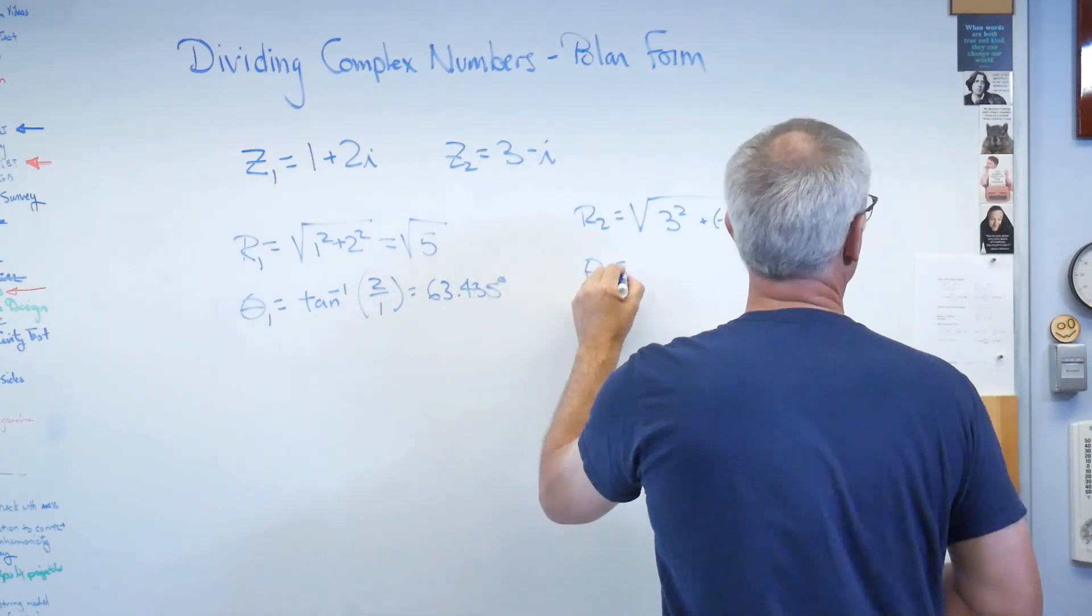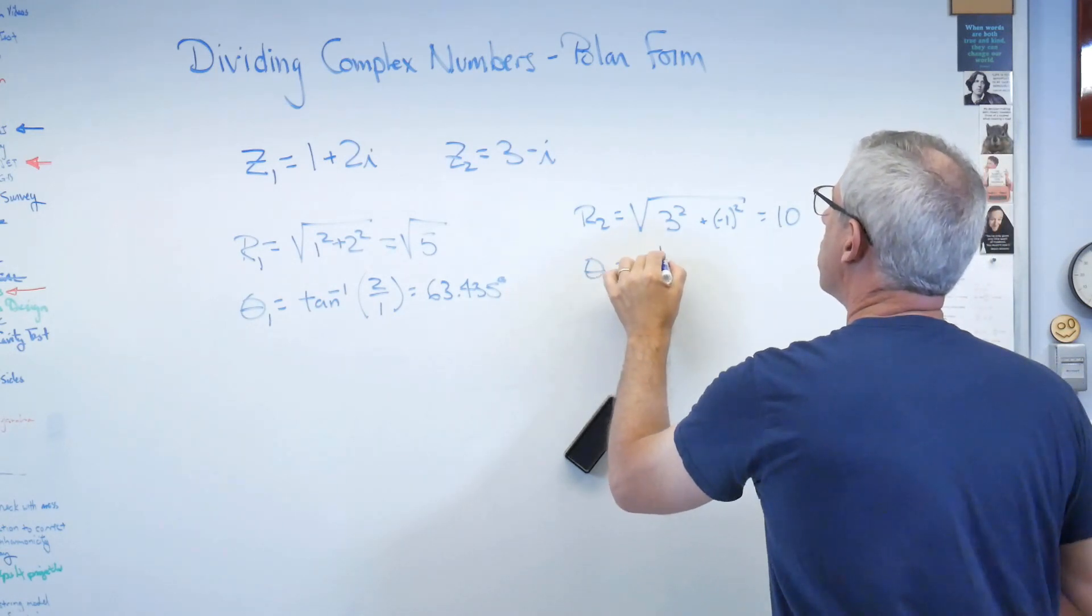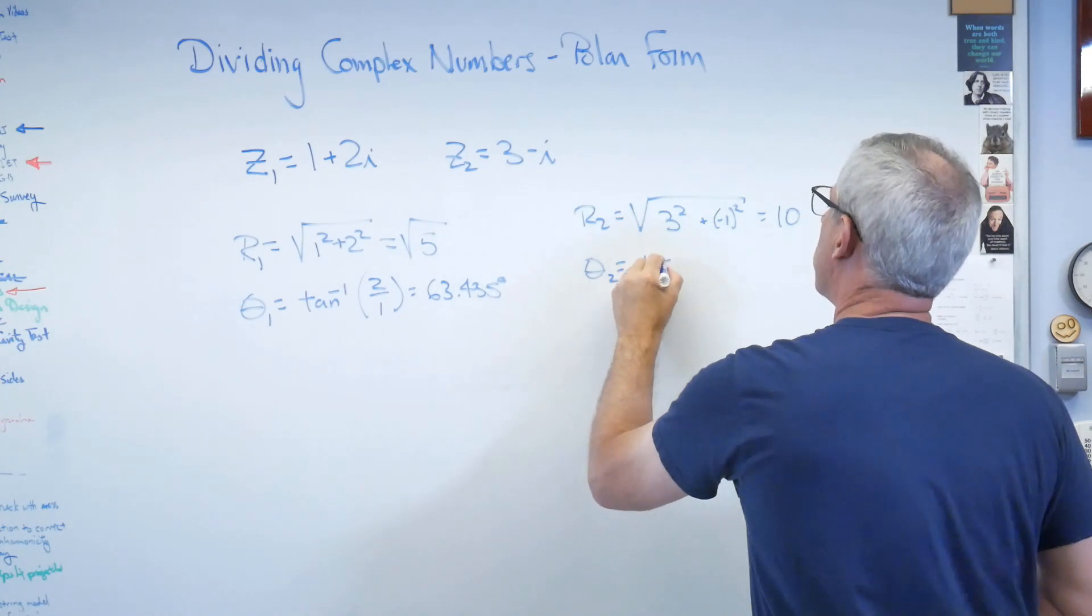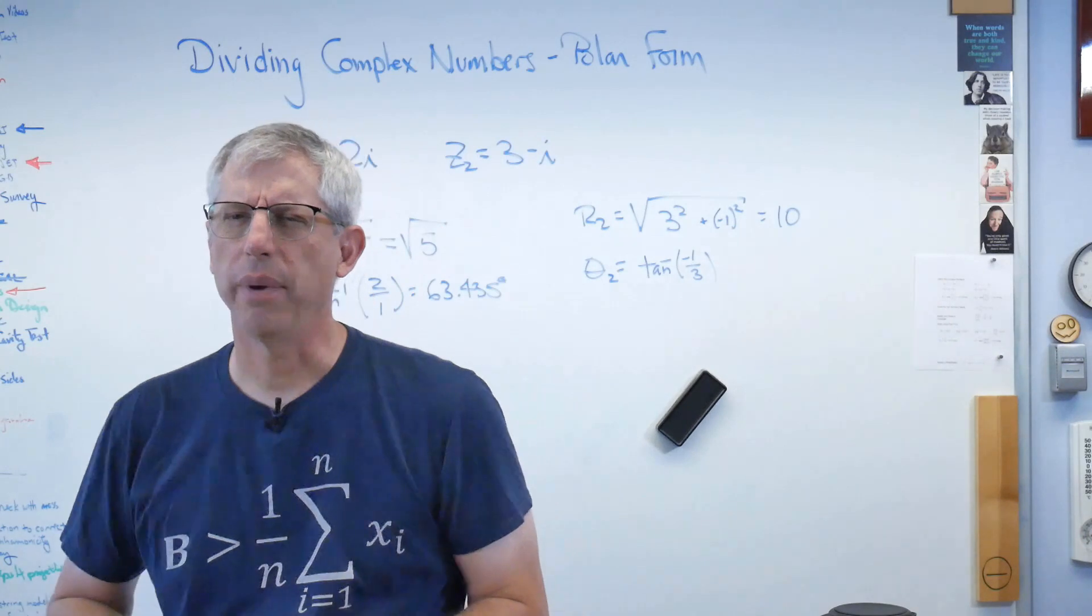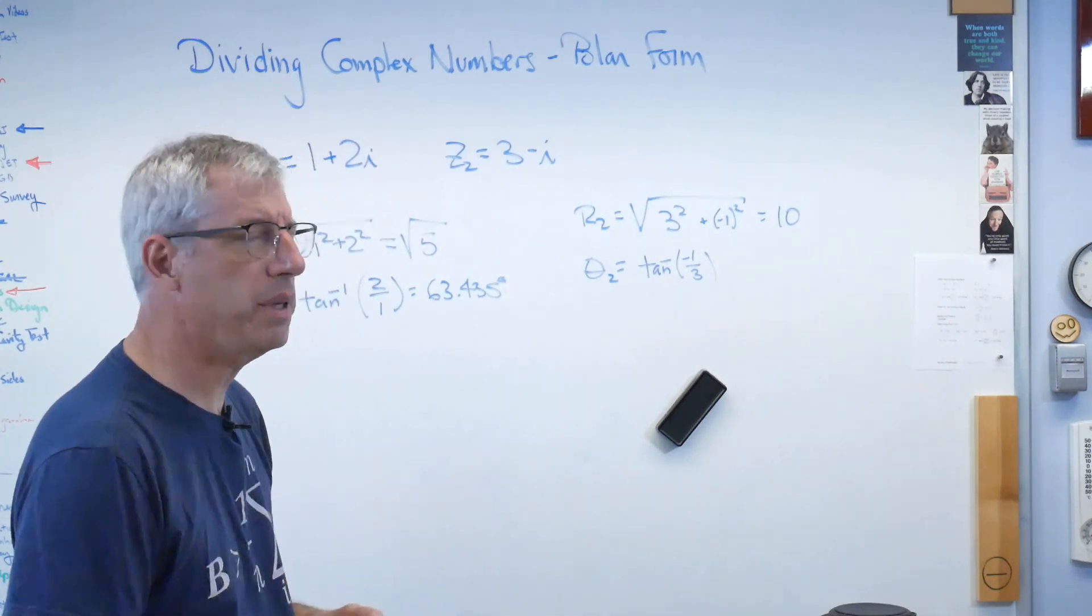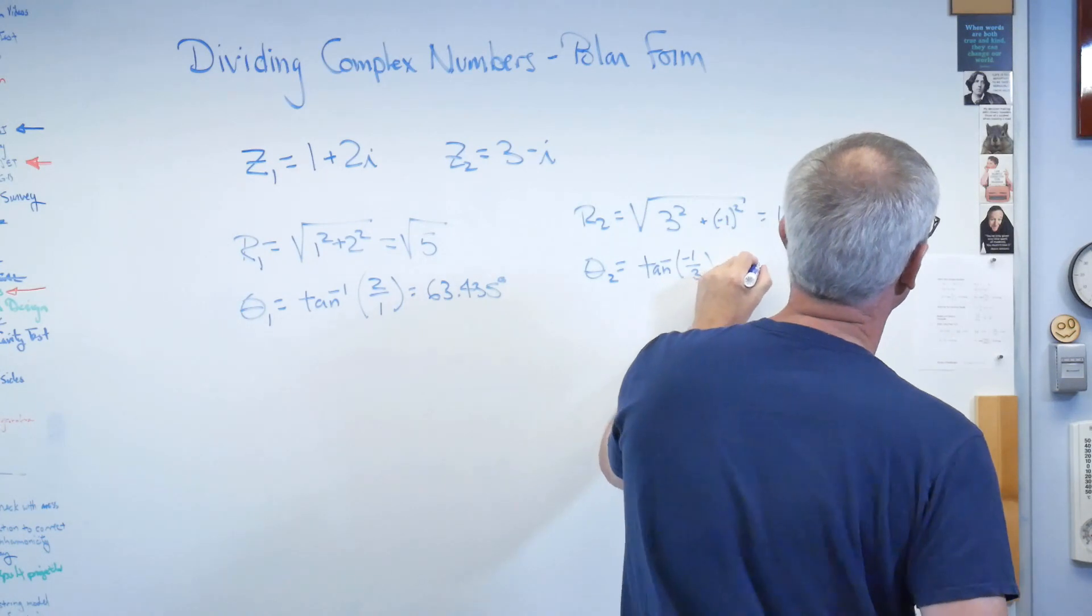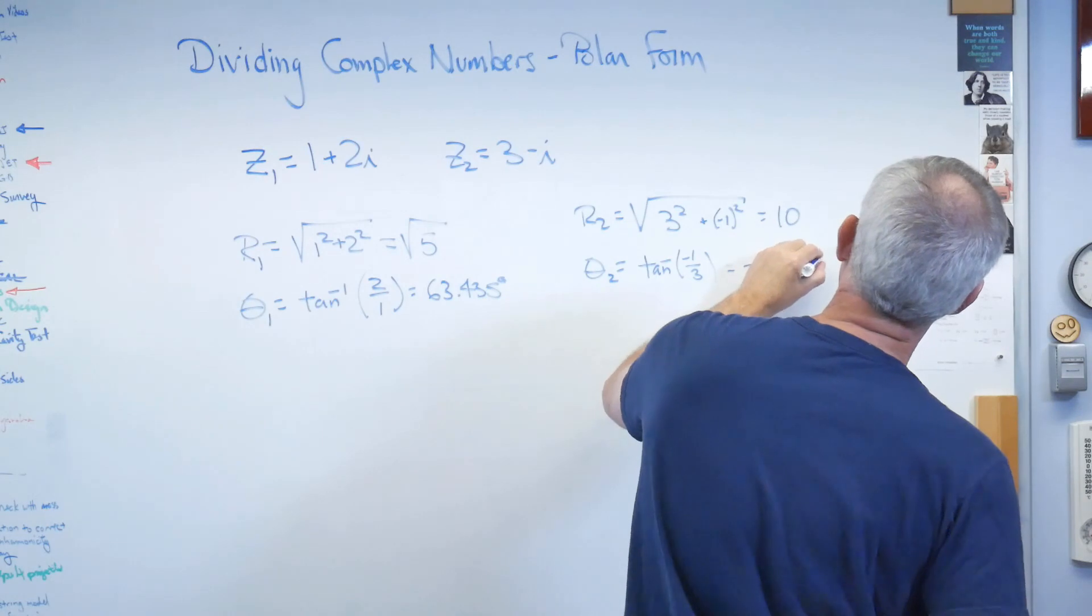And theta2 is going to be, let's see, minus 1 over, I'm sorry, inverse tangent of minus 1 over 3. All right. Does it matter that the inverse tangent is negative? No. It just means it's a negative angle. That's okay. And then you get minus 18.435.